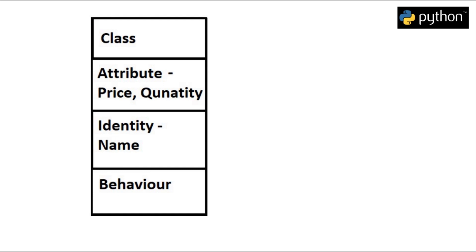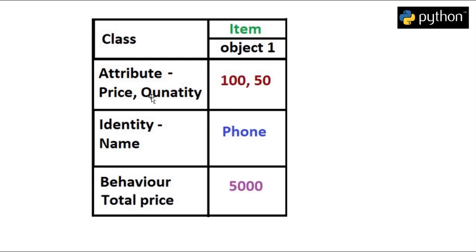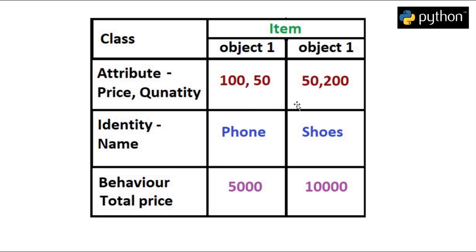If we define the first object, let's say phone, belonging to the item class, then we will define its price and quantity. Let's say the price of every phone is 100 and the quantity is 50, and the behaviour would be the total price — multiplying 100 by 50 gives us 5000. Let's take another item, shoe. If we define shoe as an object of the item class, we define the price and quantity as 50 and 200, giving a behaviour of 10000. So object 1 (phone) and object 2 (shoe) are instances of the class item.